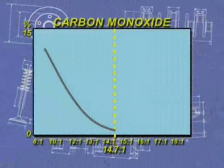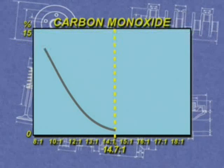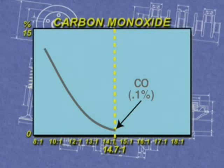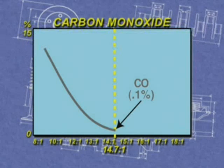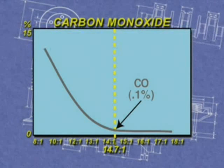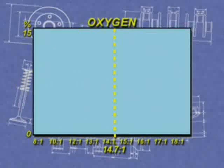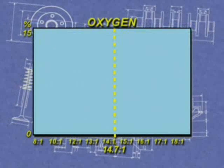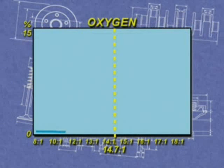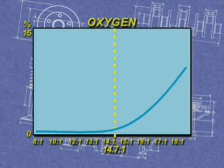As you can see, carbon monoxide is an excellent indicator of a rich mixture on the rich side of the stoichiometric point. At 14.7 to 1, CO is approximately one-tenth of one percent, and then drops off to near zero as the mixture becomes leaner. This is why the best indicator of a lean mixture is O2. Notice how oxygen remains close to zero until the mixture becomes leaner than 14.7 to 1.